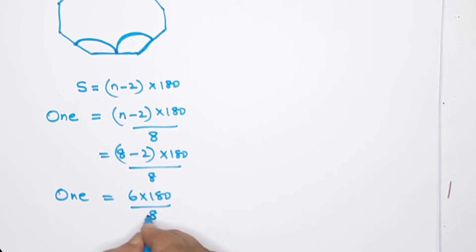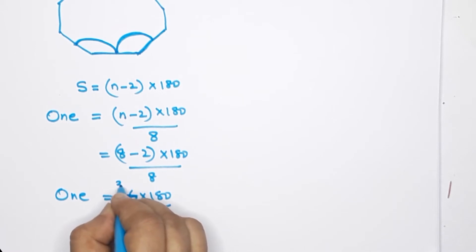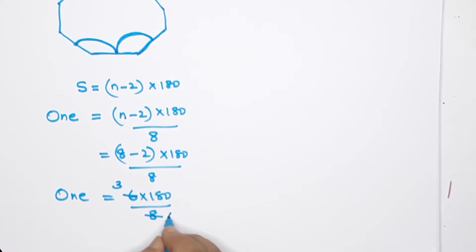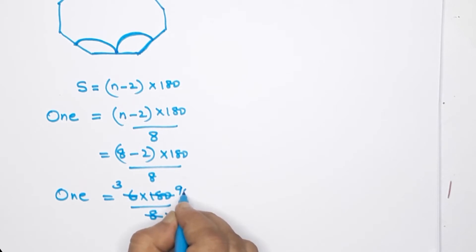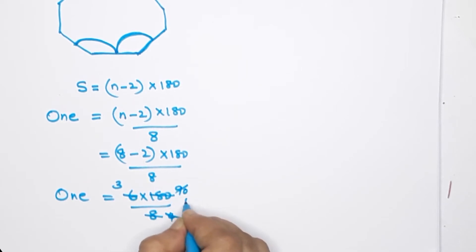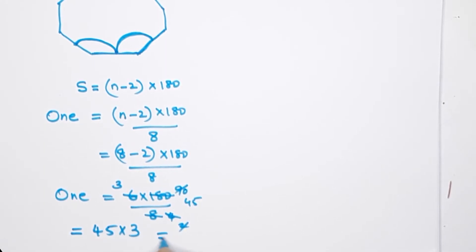So we have to work this out: 6 × 180 ÷ 8. Here we get 3 and 4 making 90 and 90, then 2 making 45. So one angle is 45 × 3 = 135 degrees.